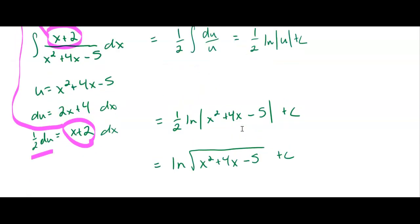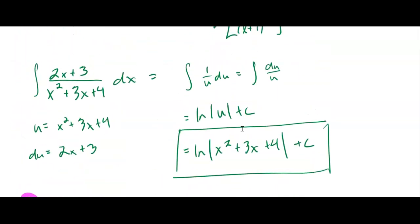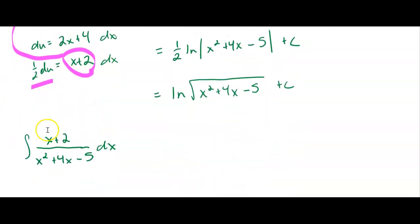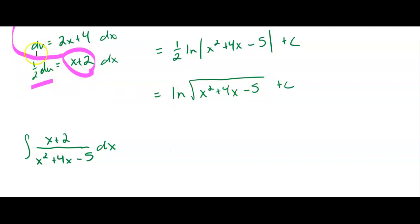So you should see that with this one and with the previous one, this one up here, they were both set up for us to do a pretty easy u sub with the u and the du. The 2x and the 3 lined up really well with what I had in the bottom in order to integrate. Same thing down here. The x plus 2 lined up really well with this piece down here, and it made it so it was easy to integrate. I had to deal with the half, but that wasn't too big of a deal.